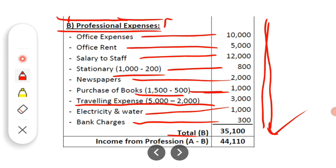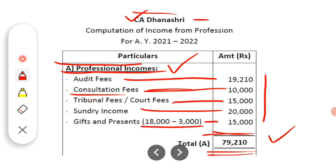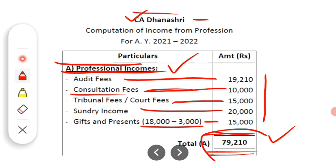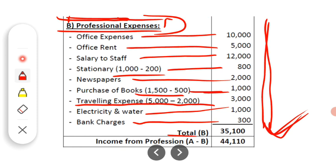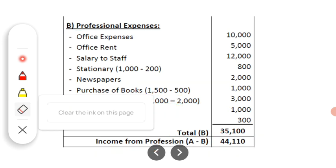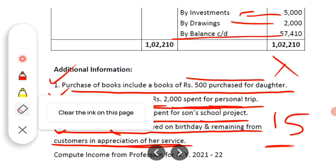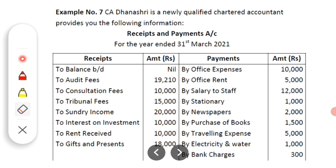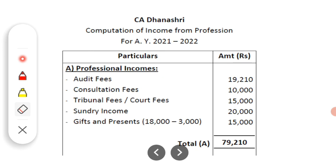After listing all professional incomes and professional expenses, we calculate the net income from profession by subtracting total professional expenses from total professional incomes.